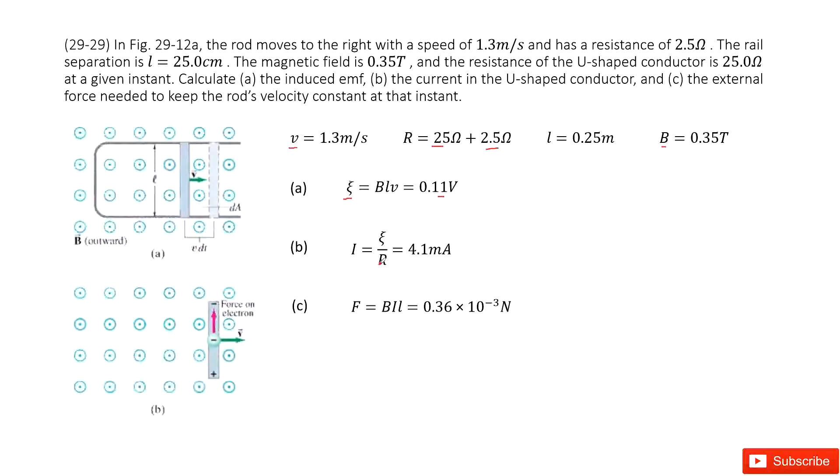The second one is to get the current in this U-shaped conductor, so in this loop. We use the induced EMF, or epsilon, divided by resistance R, and we get the answer there.